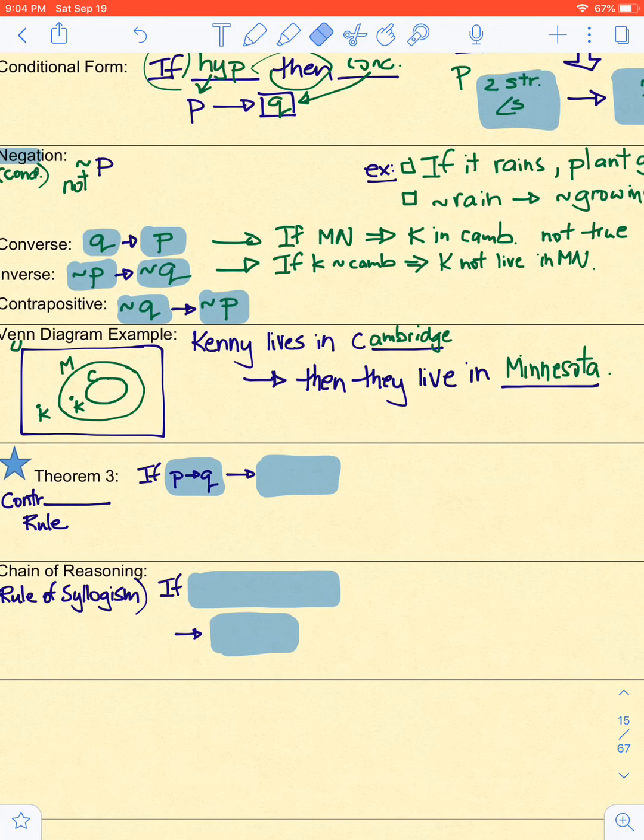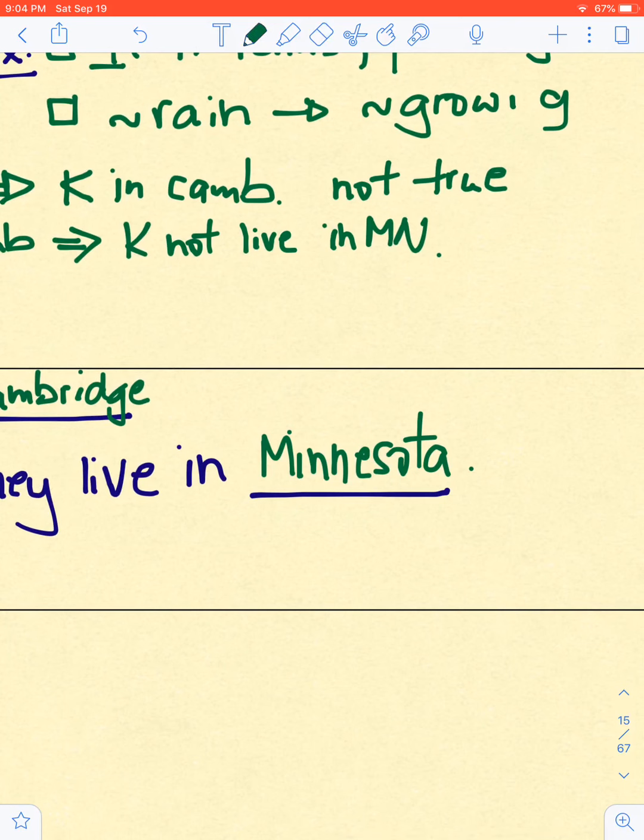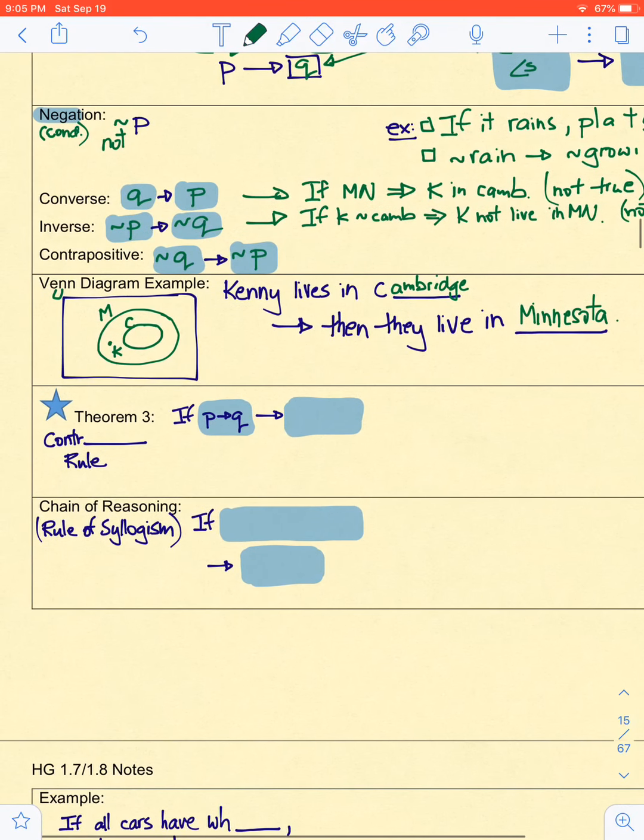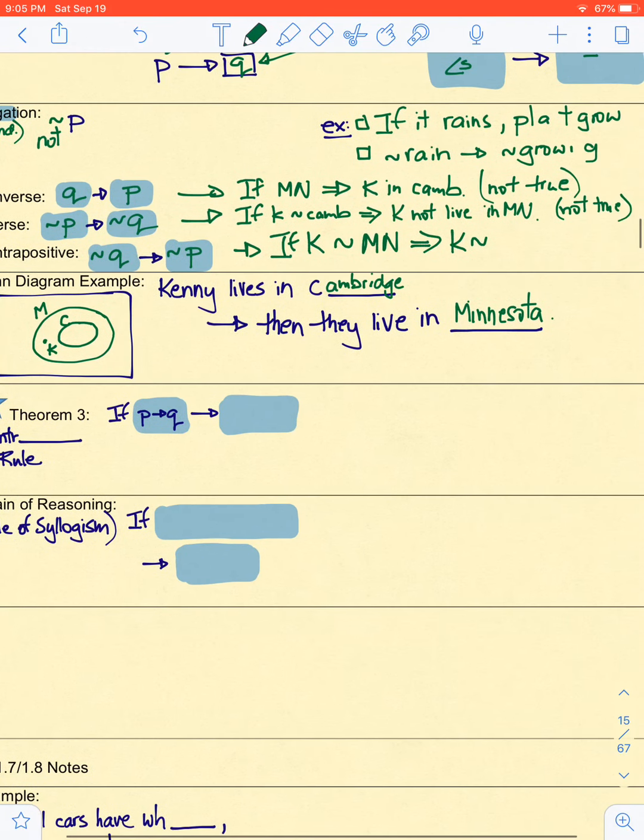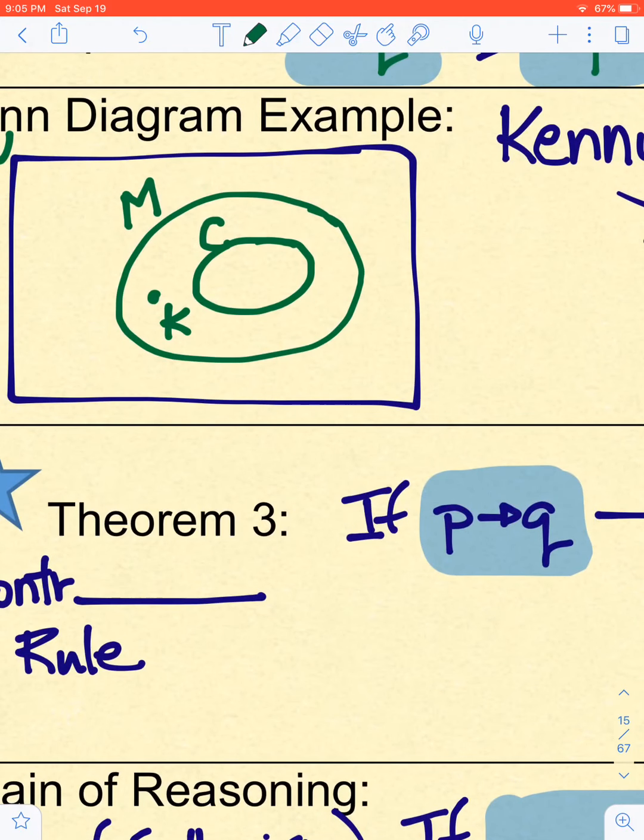Now the contrapositive. If Kenny does not live in Minnesota, then he doesn't, Kenny doesn't live in Cambridge. And that is patently true. Because no matter where you put Kenny, if he is not in Minnesota, then he could be out here. And that's the only place he could be. He definitely cannot be in Cambridge. So, this last statement, which is called the contrapositive, is true. So there is a little Venn diagram showing that.